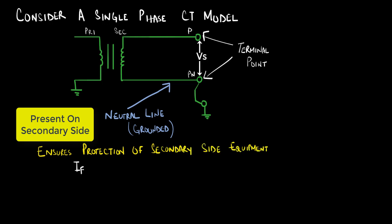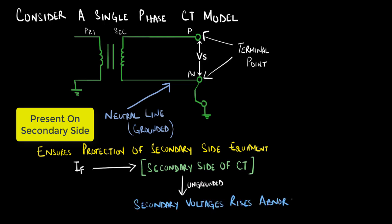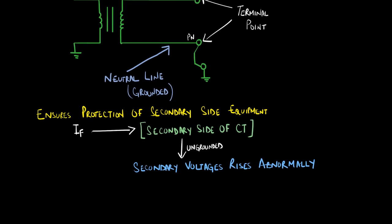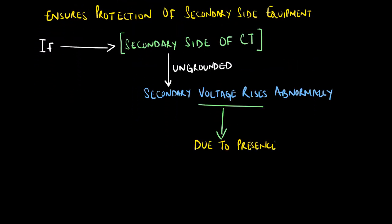On the other hand, if we had left the CT ungrounded, this would cause the secondary voltage, Vs, to rise to abnormal values. The voltage rise is due to the presence of stray capacitances.